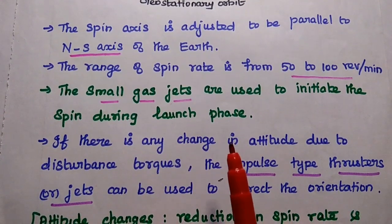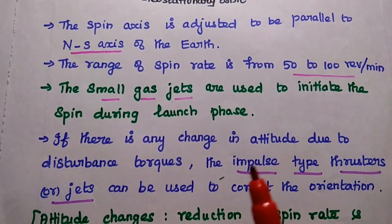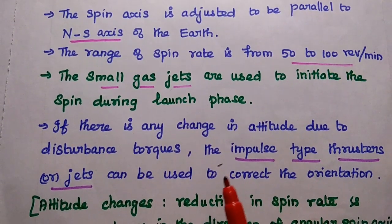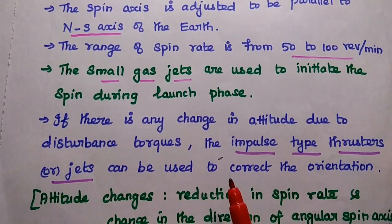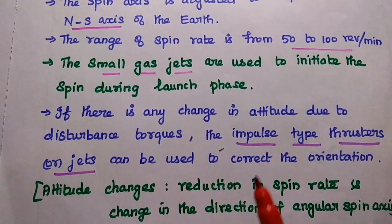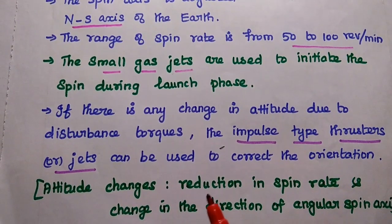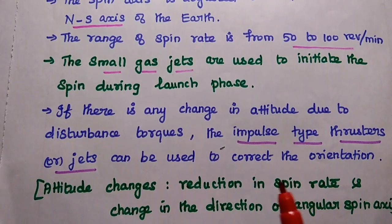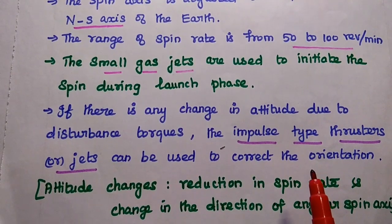If there is any change in attitude due to disturbance forces — both external and internal — then impulse-type thrusters or additional jets are used to correct the orientation. This is called spinning satellite stabilization.